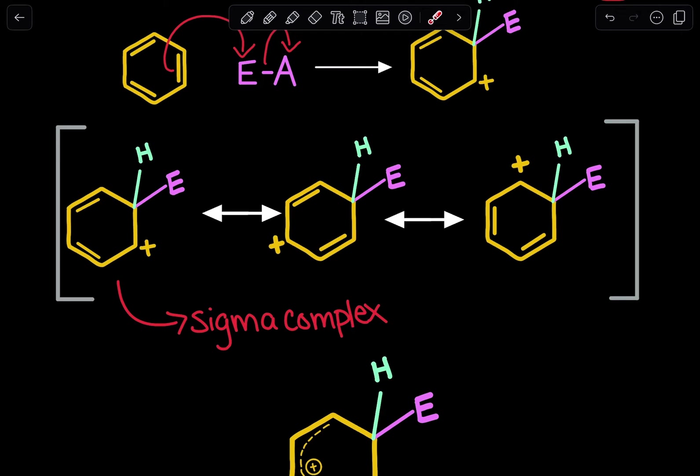We're going to draw the third and final resonance structure in which we have this positive charge over here. What we can do is move these electrons down to that carbon and as a result, we will get that pi bond over here and now this top carbon will bear that positive charge.